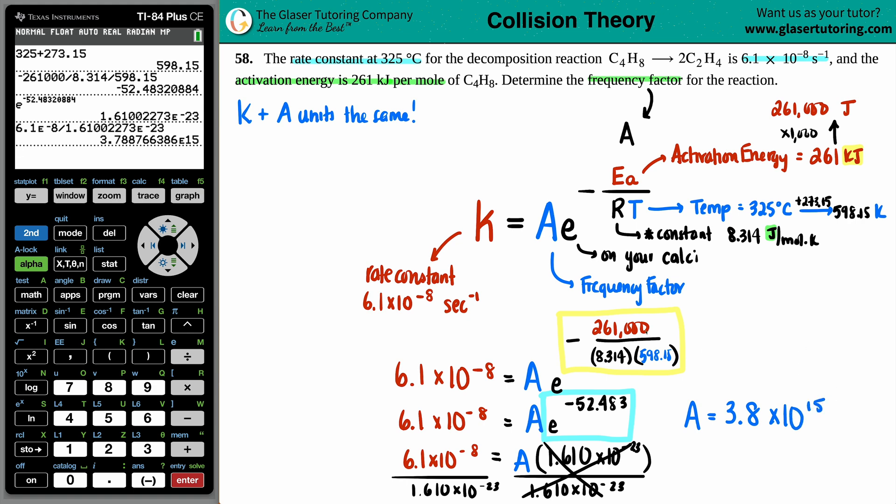So 3.8 times 10 to the 15th. And just know that the a and the k units are the same. So since the k value was per second, this is also going to be per second. So, you know, collisions per second, frequency per second.